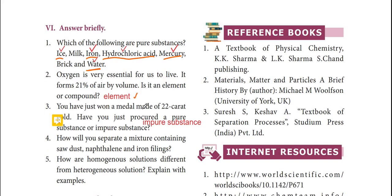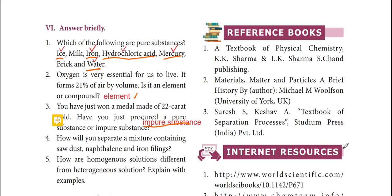Third question: you have just won a medal made of 22-karat gold — is it a pure or impure substance? This is an impure substance, because 22-karat gold is not completely pure gold. It contains a small mixture of silver and copper, so it is an impure substance.